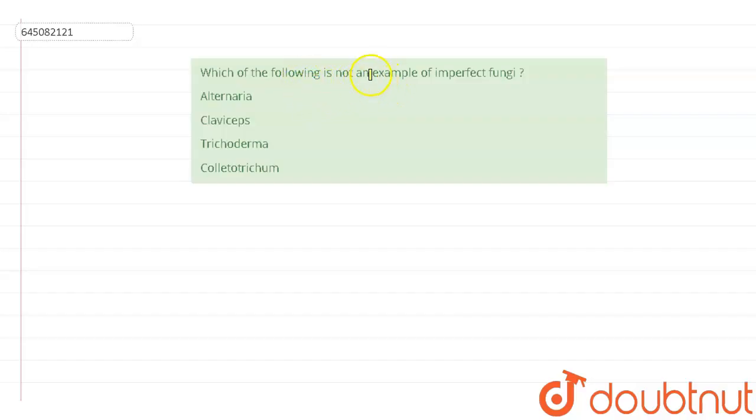Which of the following is not an example of imperfect fungi? The options given are: first is Alternaria, second is Claviceps, third is Trichoderma, and fourth is Colletotrichum.